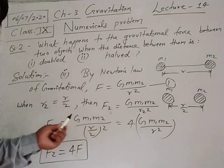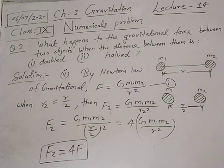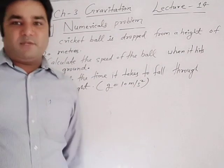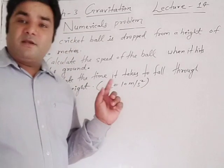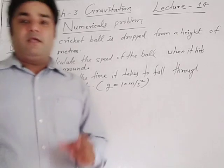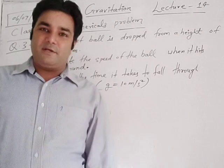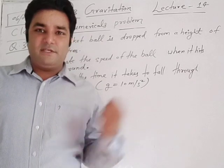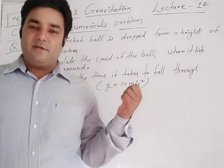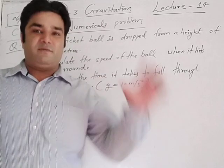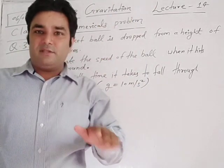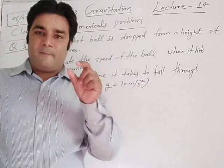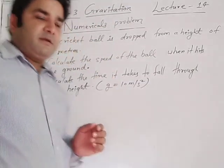After this we will solve the third numerical, which is very easy and interesting. It is based on a previous concept from the first chapter — Motion. In the motion chapter we discovered 3 equations of motion. Here we will use those equations of motion but under the influence of gravity. Whenever a body is dropped from a certain height towards ground level, the acceleration used is equal to gravity g. Whenever thrown up, acceleration is gravity with a negative sign.